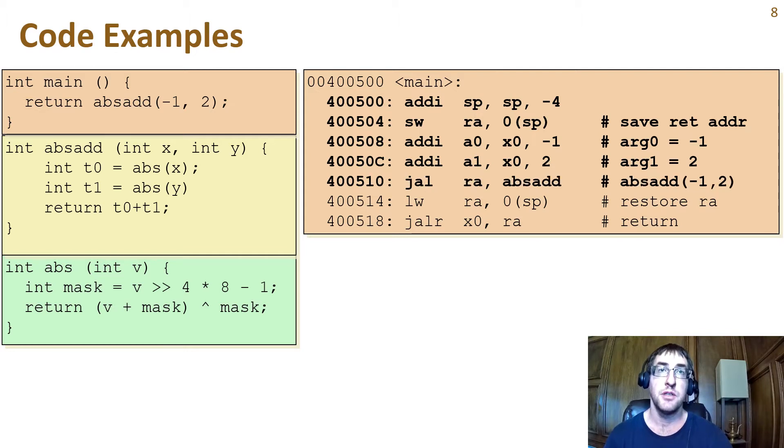The next two lines put the constant arguments negative 1 and 2 into the a0 and a1 argument registers. Here, we make the procedure call to absadd. We'll look at that function next, but first let's see what will happen when it returns.